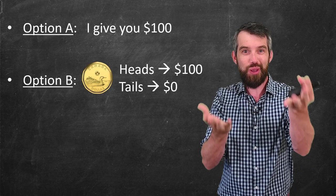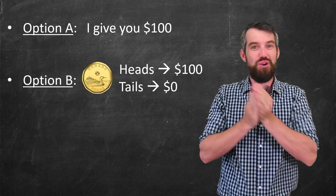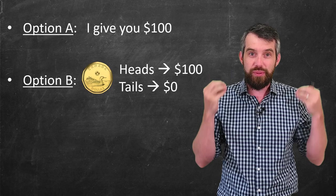Well, option A, of course. For option A, you always get the $100. For option B, you only get the $100 50% of the time.